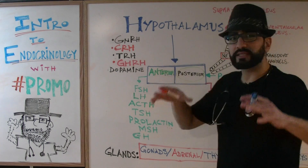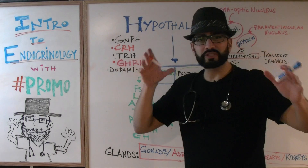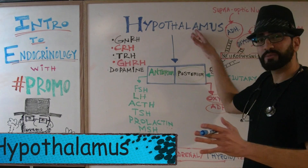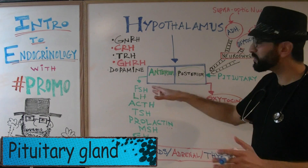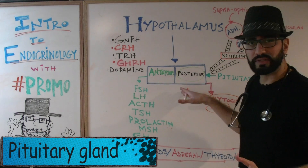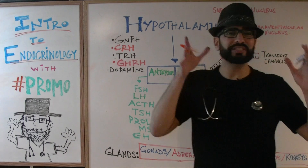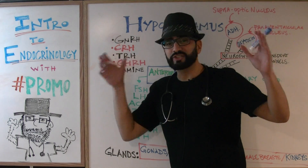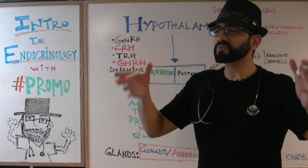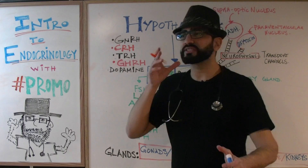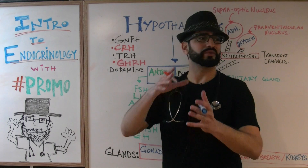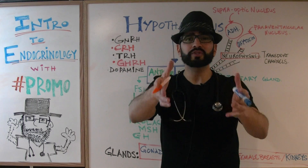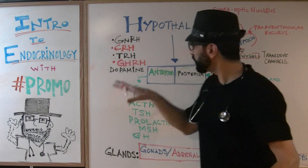When we talk about the endocrine system, you want to be familiar with these important structures in the brain — the first one being the hypothalamus and the next one being the pituitary gland. Think of the hypothalamus as a control center which sends out releasing hormones or inhibitory hormones.